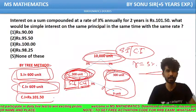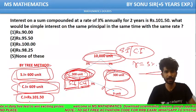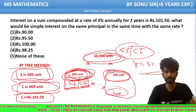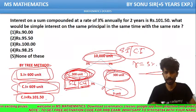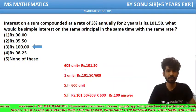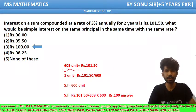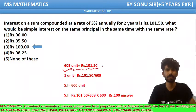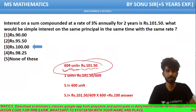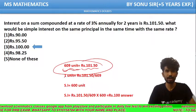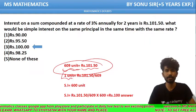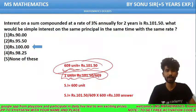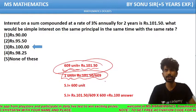We have also been given the compound interest in rupees, which is equal to Rs. 101.50. So we can equate: 609 units is equal to Rs. 101.50. From this, we can calculate the value of 1 unit: 1 unit equals Rs. 101.50 divided by 609.